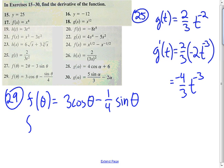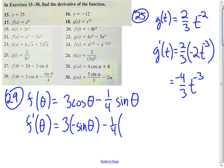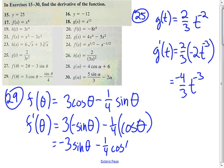And so applying that, I can find f prime of theta is equal to three times negative sine theta minus one-fourth times cosine theta. And I would just rewrite that by putting the negative out front. So we've got negative three sine theta minus one-fourth cosine theta.